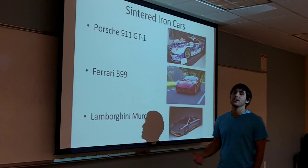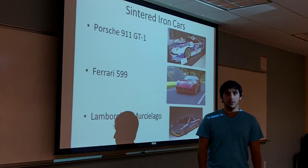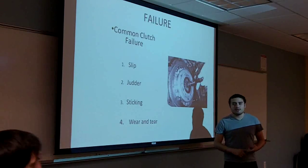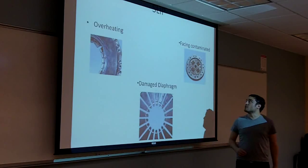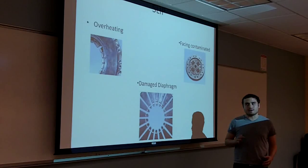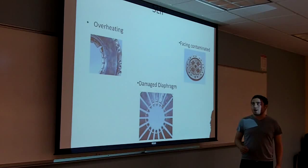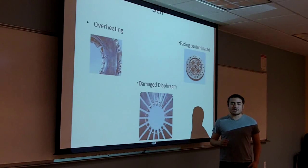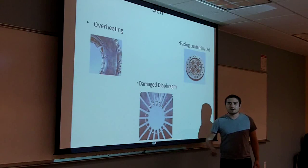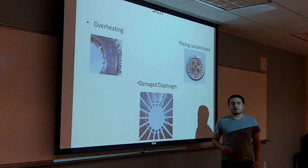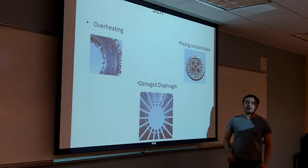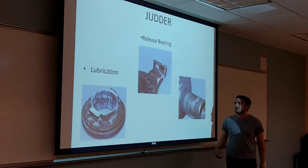If you don't choose the right material you'll have failure. There are four main types of failure: slip, judder, sticking, and wear and tear. Slip occurs when the drive disc and driven disc do not rotate at the same speed at the same time. Causes include overheating from a damaged release system or allowing the clutch to slip for too long, a damaged diaphragm from excessive bearing preload or damaged release bearings, and contamination of oil or grease on the flywheel face, which requires full replacement.